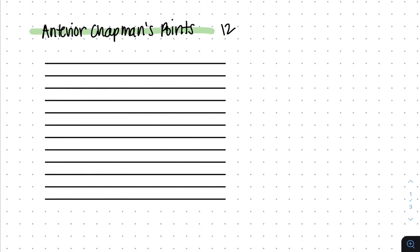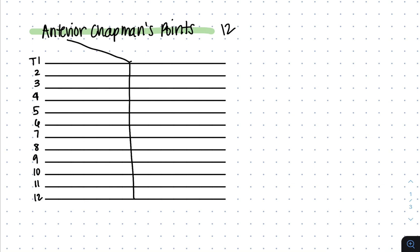For anterior Chapman's points, you'll draw 12 lines and label them T1 through T12. I like to draw a line down the middle — like my sternum — and I draw my clavicles. There are a few more things I'll draw in a second.